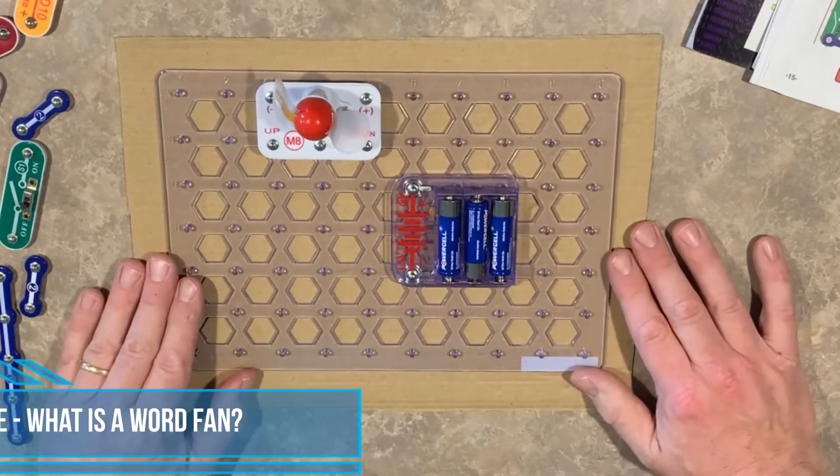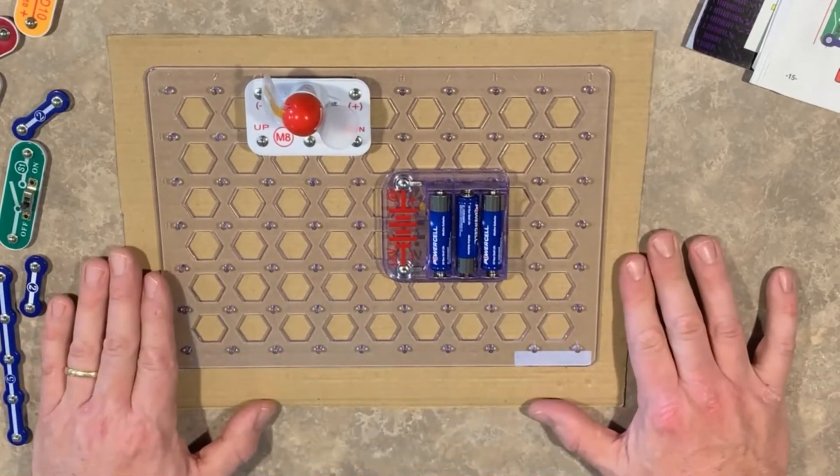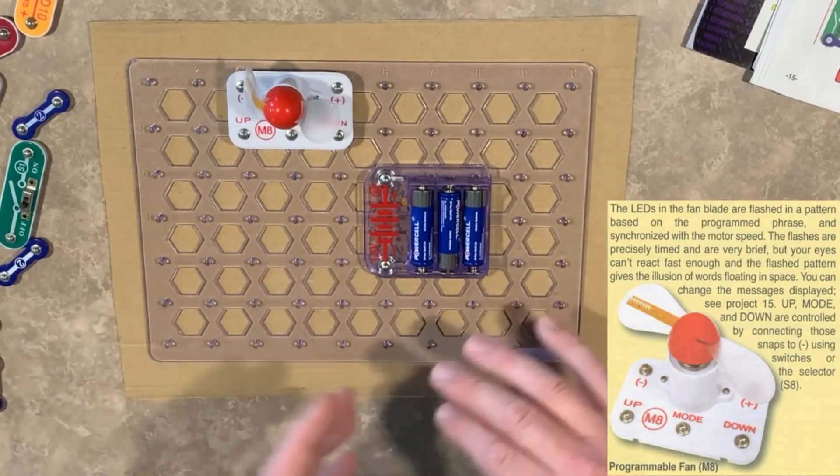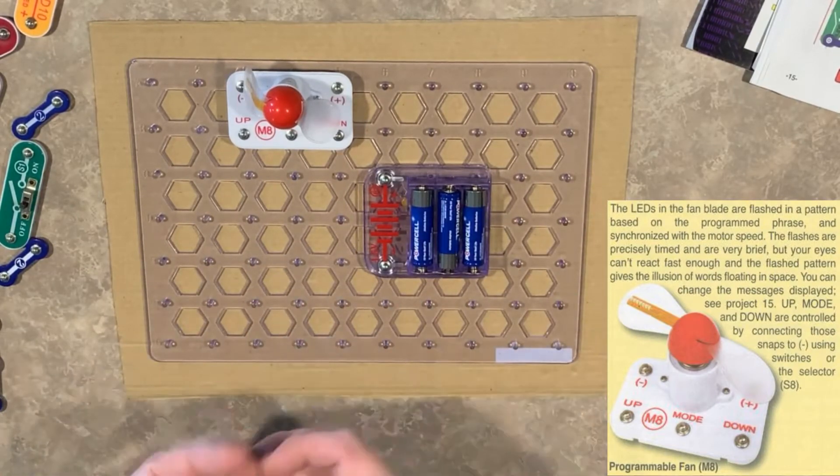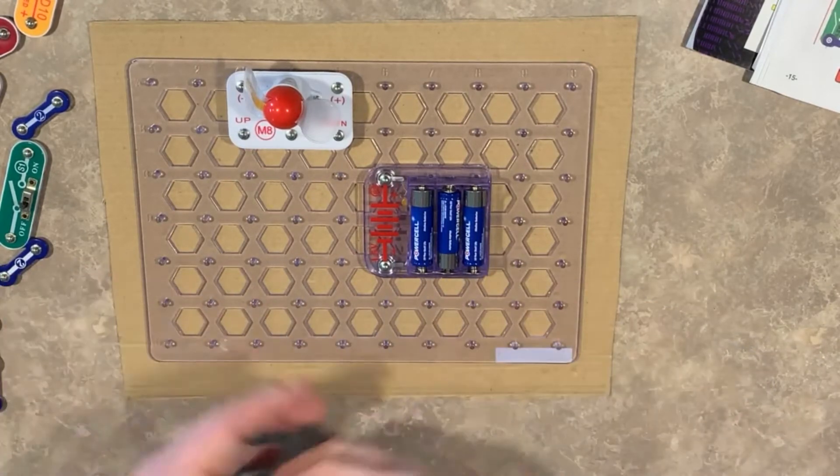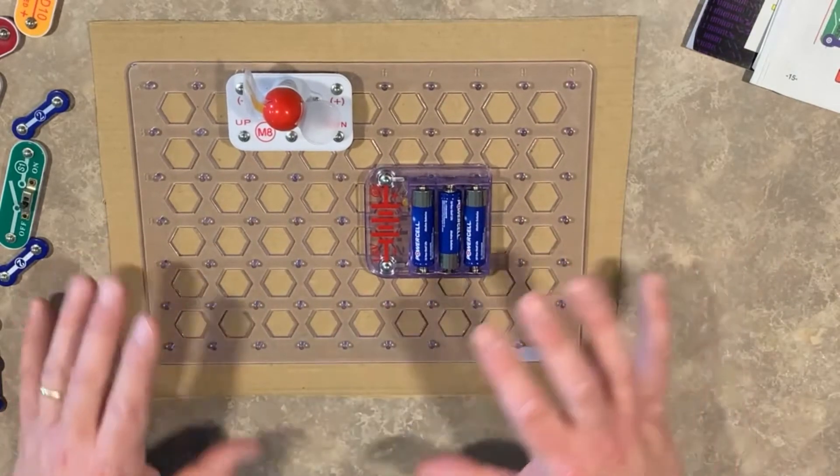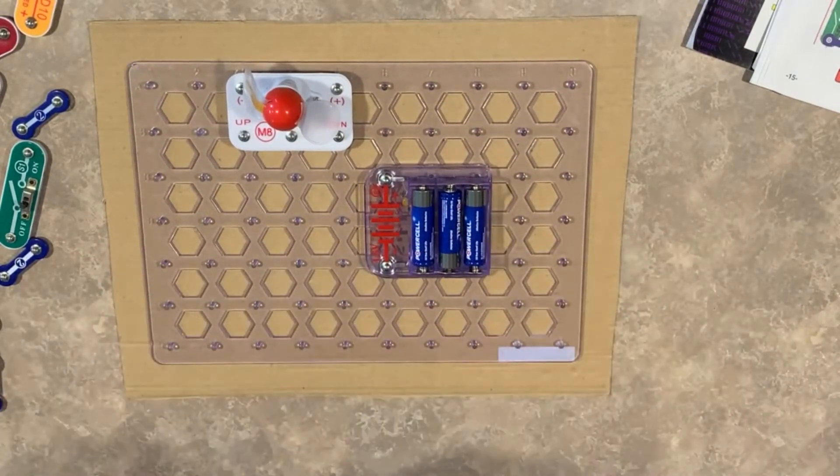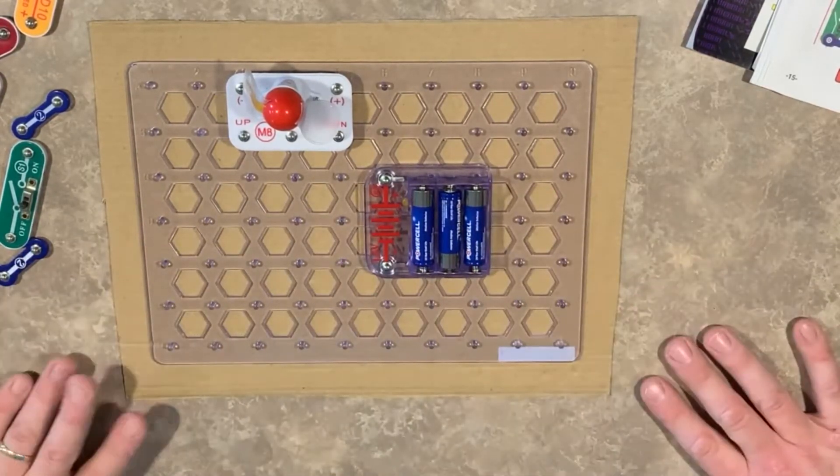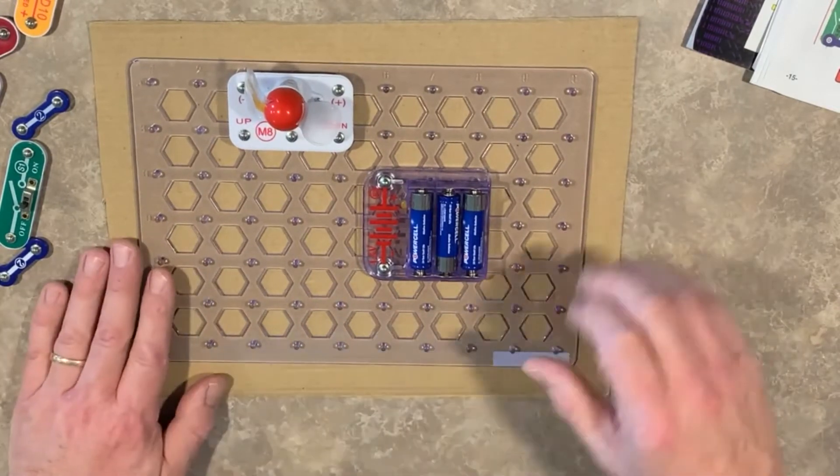All right guys, welcome to project number eight of the Snaptricity Arcade Project Kit. We're going to be working with the word fan. So by itself, we all know what a fan does. It moves air. It keeps us cool. It does things in a computer system. It keeps the components cool. It keeps things inside a motor or a refrigerator or a car cooled down. But did you know you could spell words and phrases with a fan? So I'm going to show you how to do that.